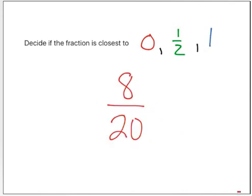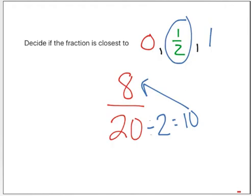My last fraction is 8 twentieths. Is that closest to 0, half, or 1? Looking at the 20 — if I want to find half of that, 20 divided by 2 is 10. 10 and 8 are pretty close to each other. So I think for that reason, the fraction 8 twentieths is closest to a half.